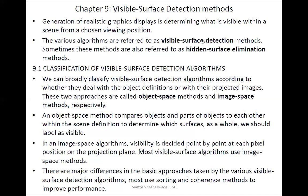We can broadly classify visible surface detection algorithms according to whether they deal with the object definition or with their projected images. There are two types: object space methods and image space methods. In object space, we focus on the geometrical properties and entities of the given object. In image space, we focus on projection lines and where they hit on the view plane in the form of pixels.